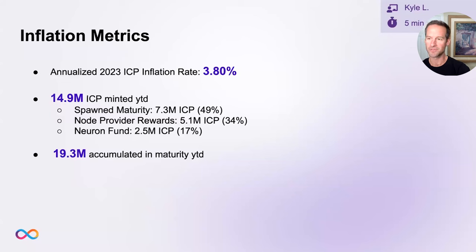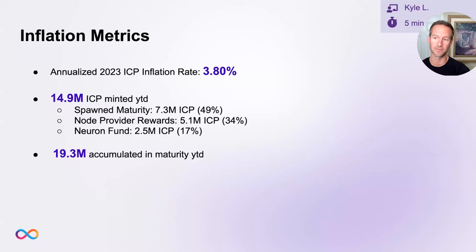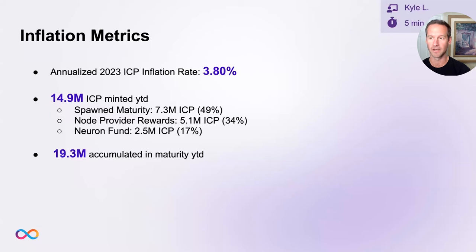If you look at that 3.8% and say the voting rewards alone should be around 6% to 7% inflation — how come we're below that? It's because NNS participants are still vastly preferring to keep their voting rewards as maturity. Especially when you look across eight-year neurons, most of them are staking their maturity, so it's staying locked in the NNS.